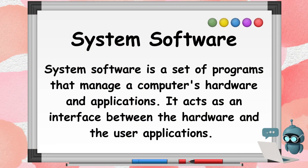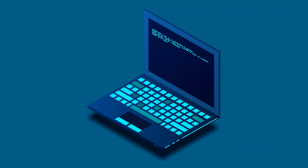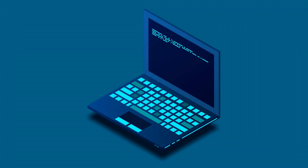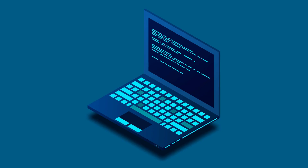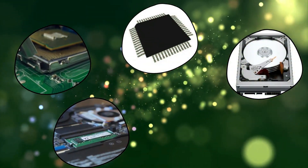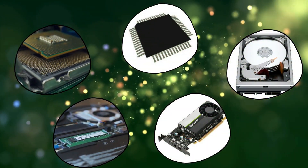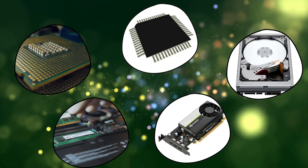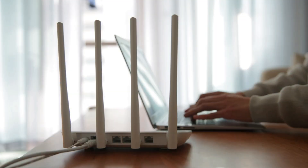System software is a set of programs that manage a computer's hardware and applications. The operating system controls and manages a computer's internal devices such as RAM, ROM, hard disk, CPU, graphics card, file systems, and network connections.